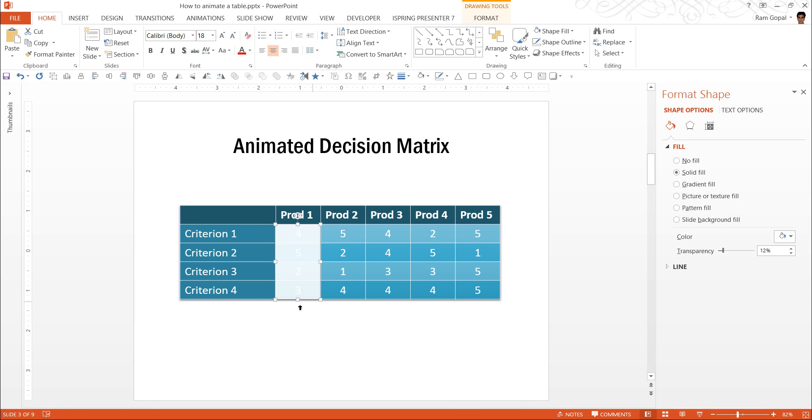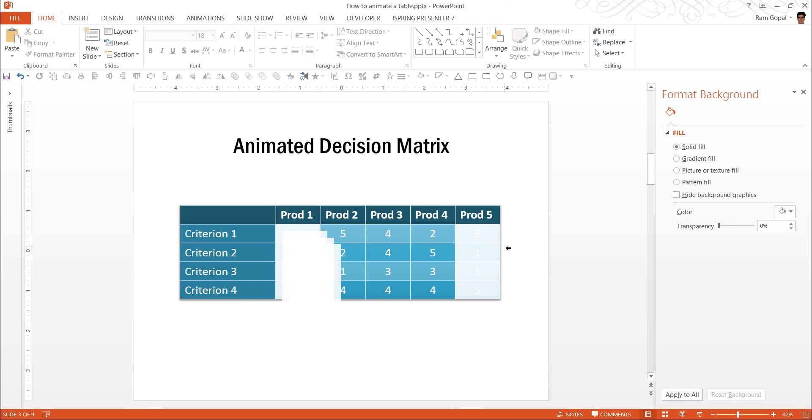Now we are going to replicate this four times so that we can place them right next to each other, so we can cover all these values here. The way to do it is after having this selected, go to control D once, twice, thrice and four times. So that we can have four duplicates created. The last one I'm going to place exactly where I want it to be.